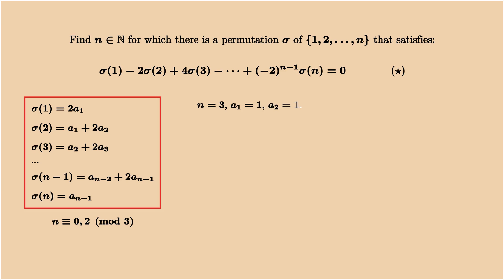When n is 3, we take a1 equals a2 equals 1. The corresponding sigma is 2, 3 and 1, which is a permutation.